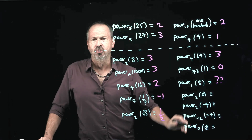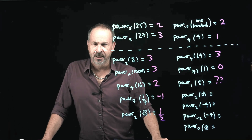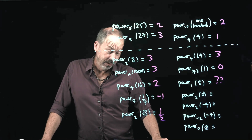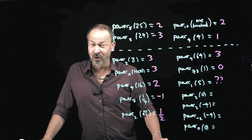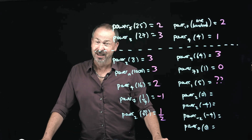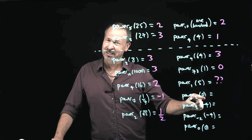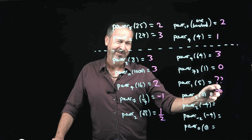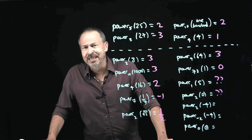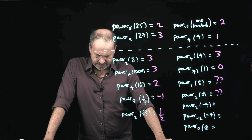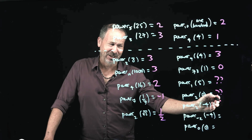What power of 2 gives the answer 0? Well, 2 squared is 4, 2 cubed is 8, 2 to the 0 is 1, 2 to the negative 1 is a half, 2 to the negative 2 is a quarter, 2 to the negative 3 is an eighth. I don't think I'm ever going to get to 0 — there is no power of 2 that gives 0. What power of 2 gives the answer negative 4? I think all the powers of 2 are positive, so I think it's actually impossible.